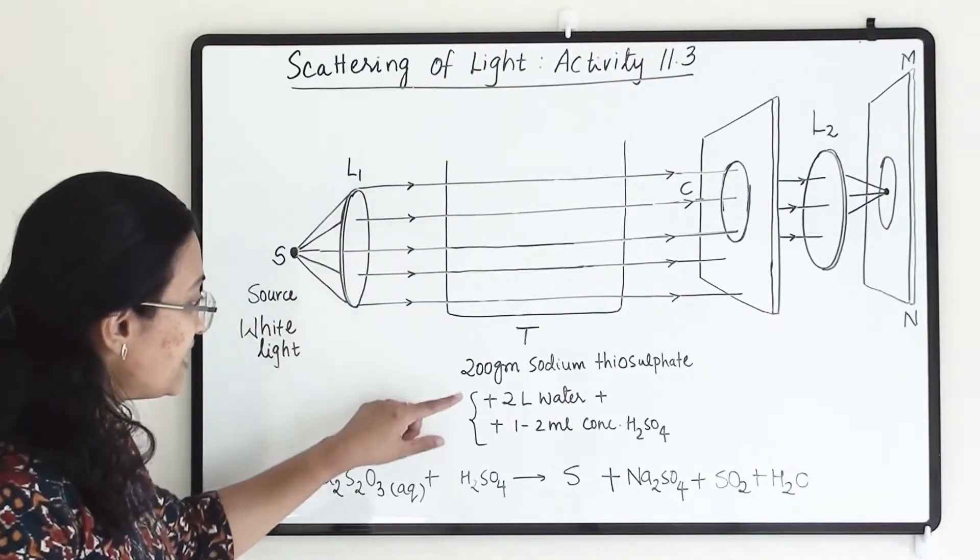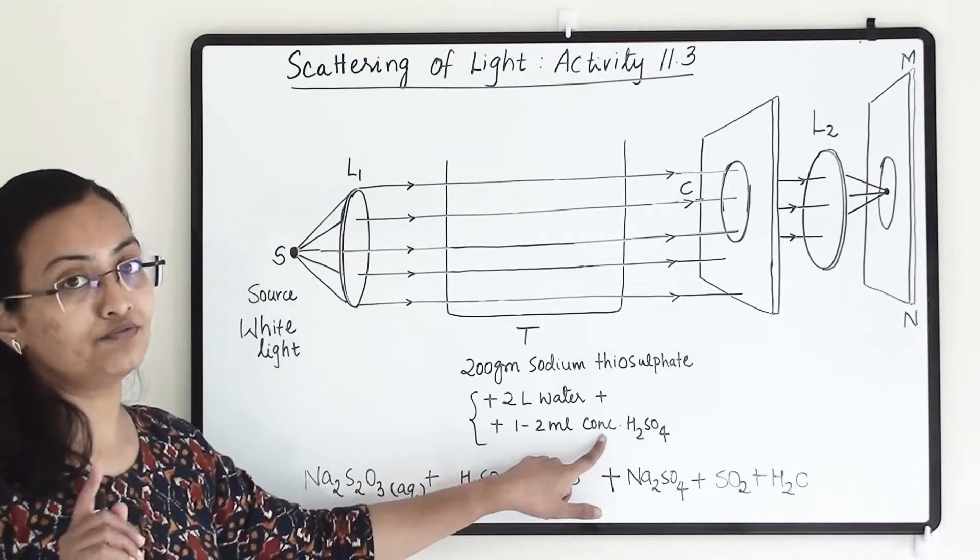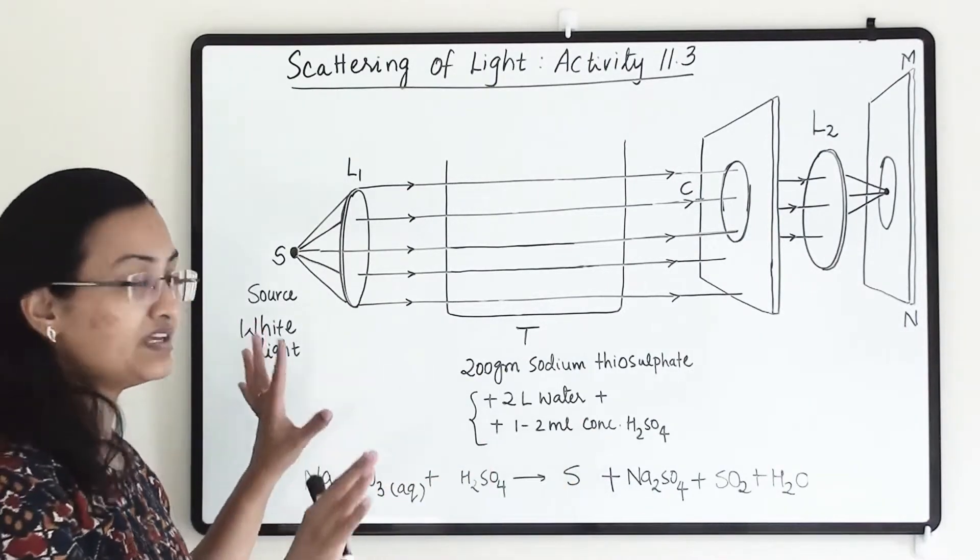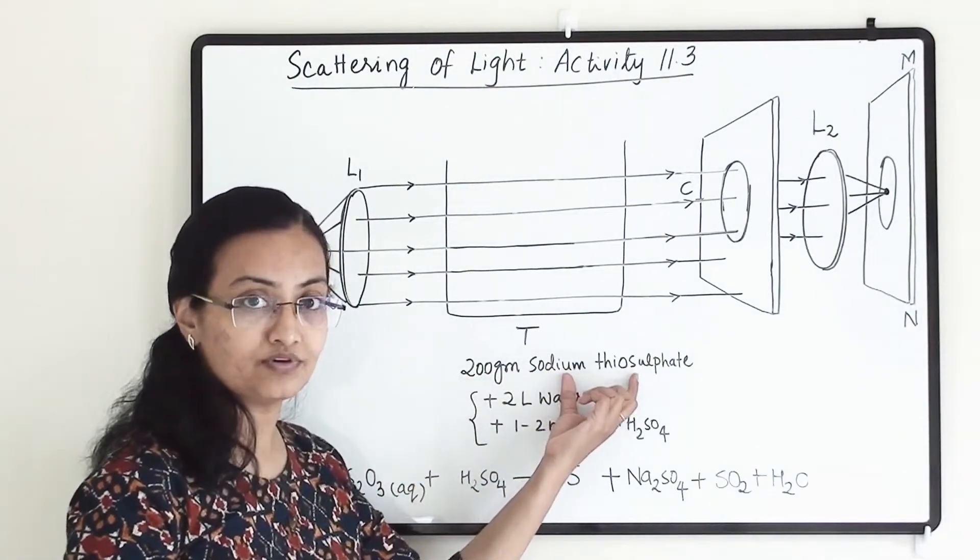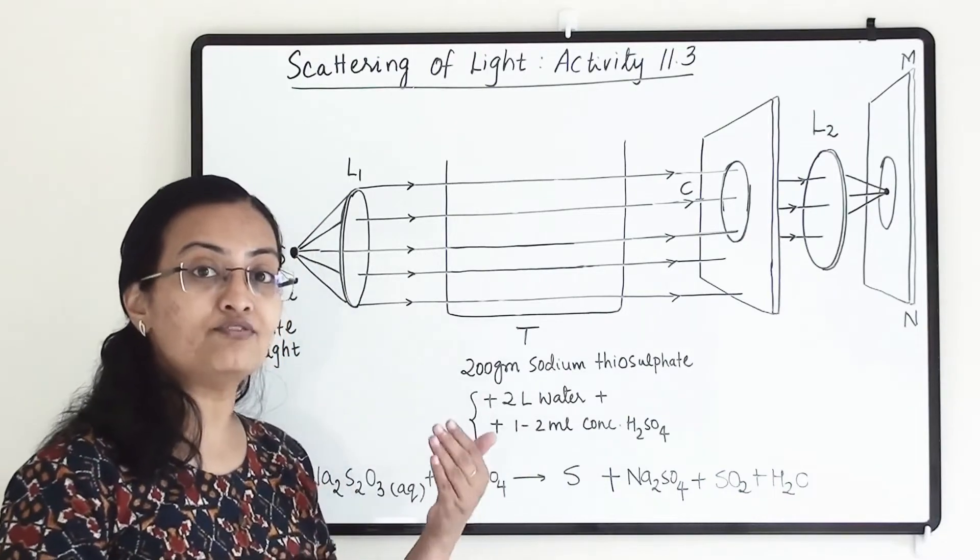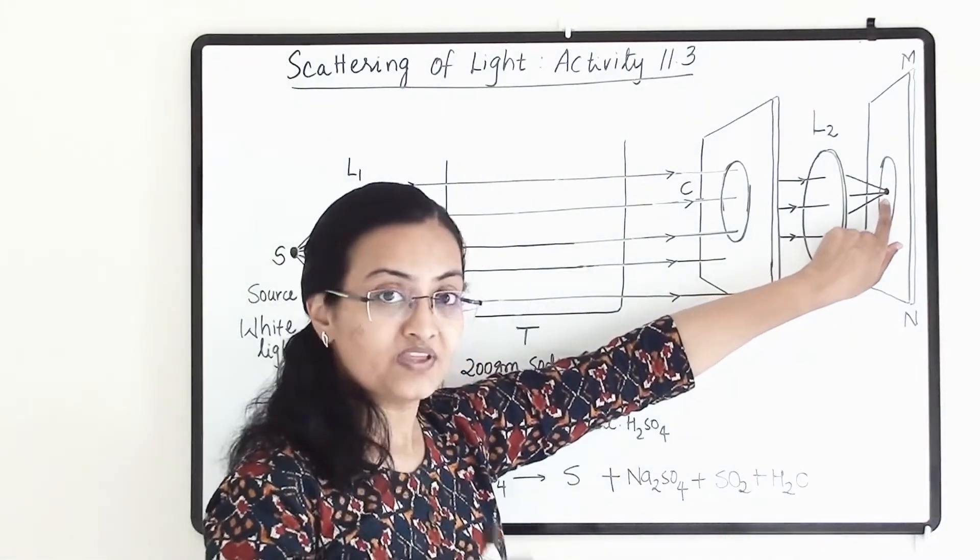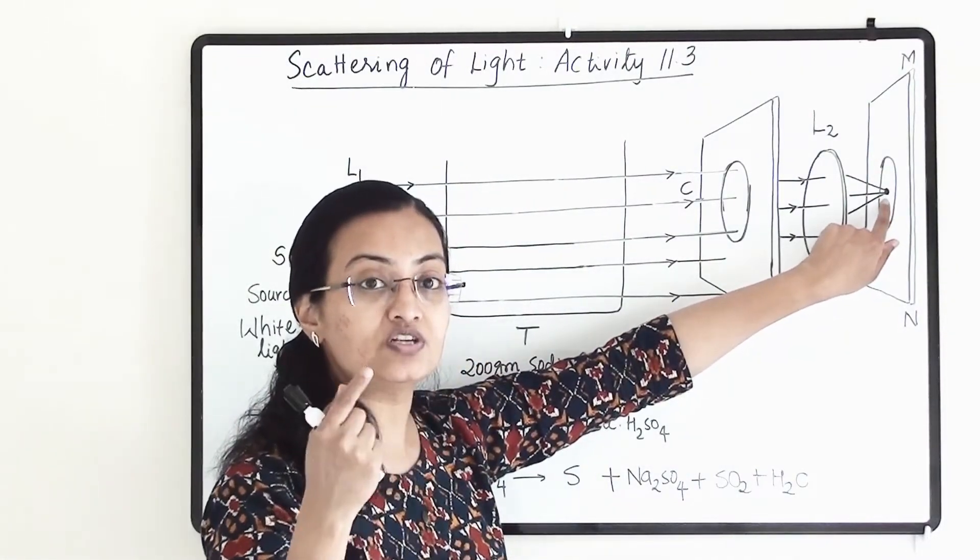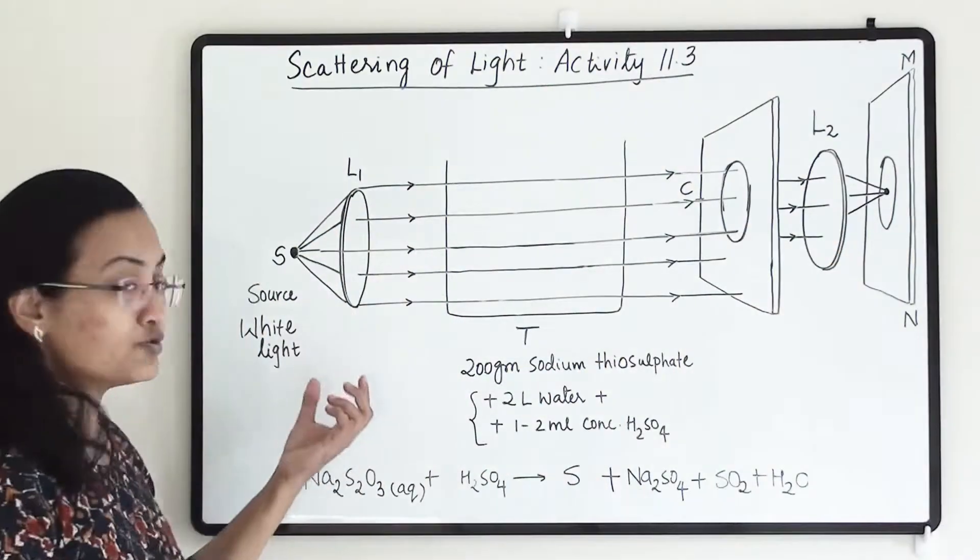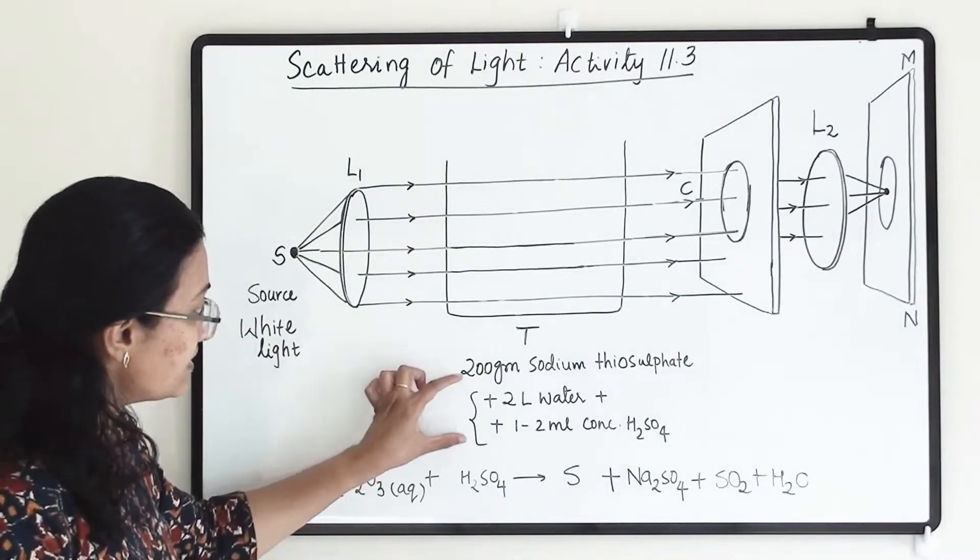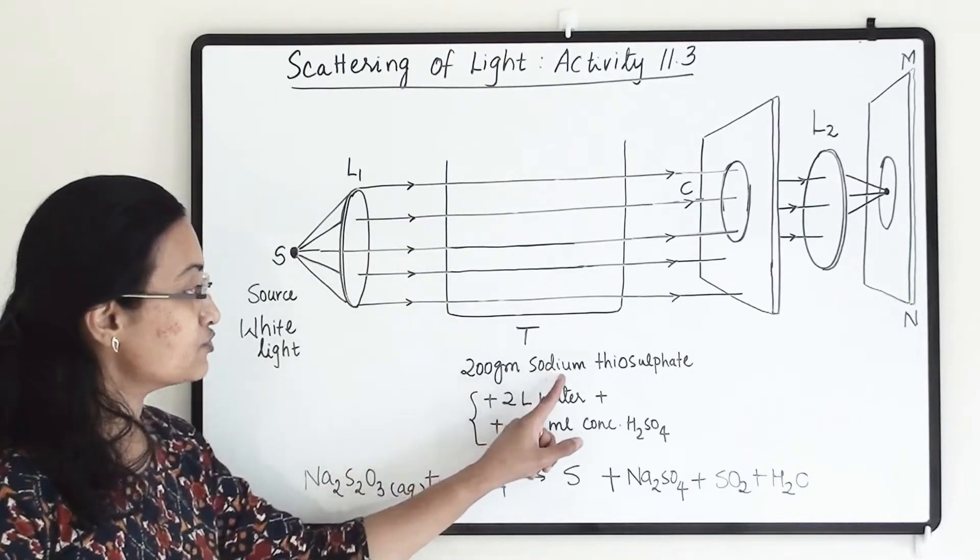So in this tank we have taken two liters of water and we have added one to two ml of concentrated sulfuric acid. Once everything is ready we are going to add sodium thiosulfate, that is 200 grams of sodium thiosulfate. Once we will add this, after one to two minutes our reaction will start and we will be able to see that here the white color beam will change and it will continuously change its color. So let us understand how and why. So in this activity these two things we are taking into the tank and once this setup is ready we are going to add sodium thiosulfate.